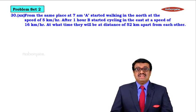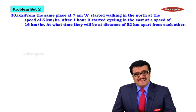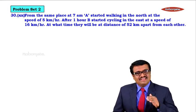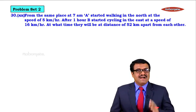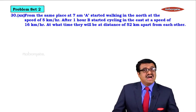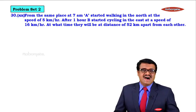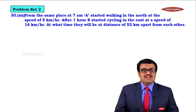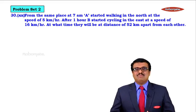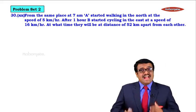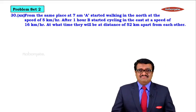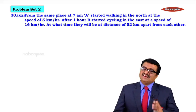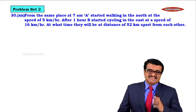Let us read the question. From the same place, at 7 a.m., A started walking in the north at the speed of 5 km per hour. After 1 hour, B started cycling in the east at the speed of 16 km per hour. At what time will they be at a distance of 52 km apart from each other?